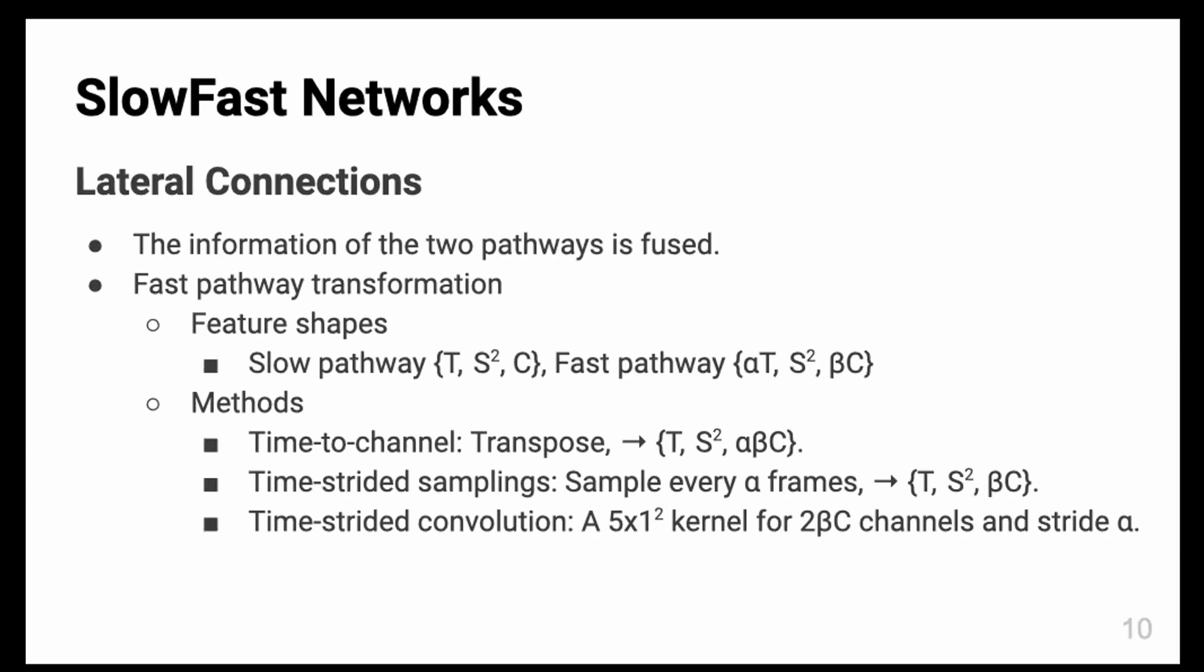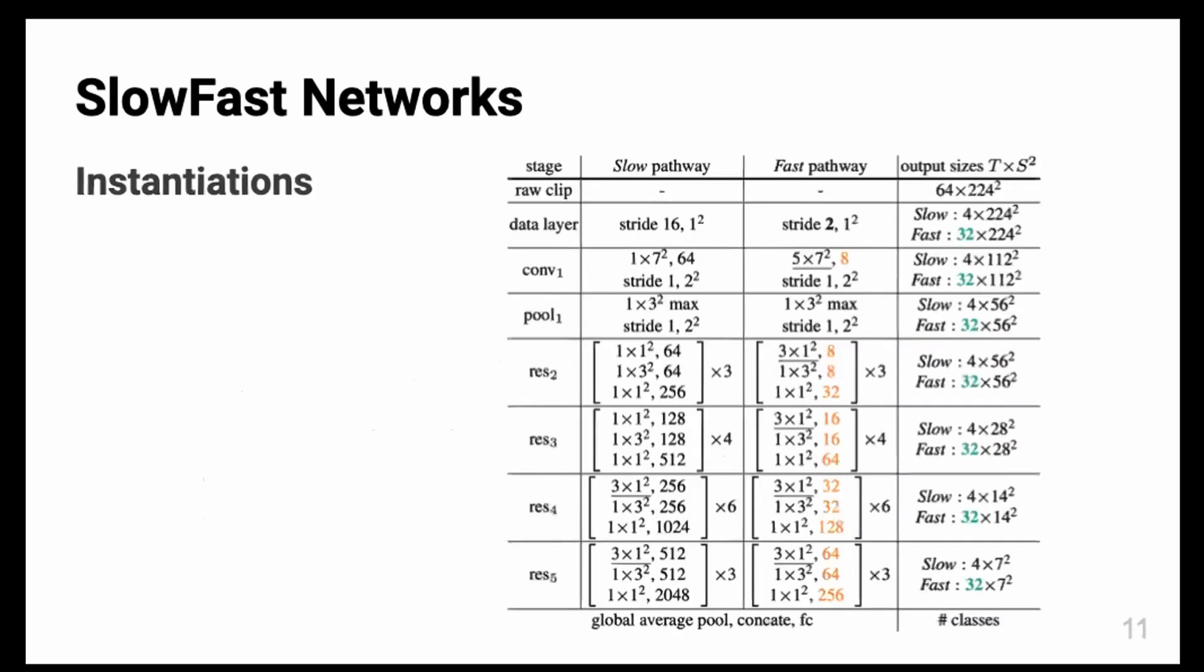Actually there is one more, which is naive concatenation of two features. The methods are time-to-channel, time-strided sampling, and time-strided convolution. For time-to-channel, they transpose the fast pathway features. Time-strided sampling samples at every α frame to make similar shape with the slow pathway. Time-strided convolution has another convolution layer to fuse.